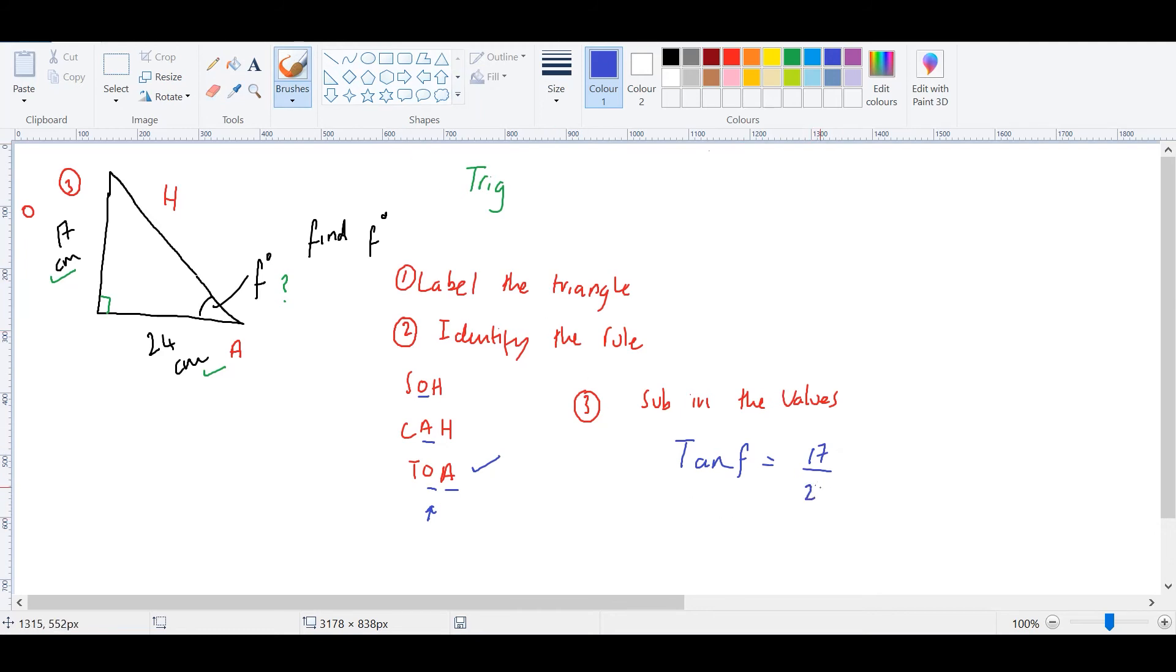So before we do anything, the first thing we want to do is just put this bit in the calculator. So 17 over 24. So what's 17 divided by 24 in the calculator? It's 0.7083 recurring.